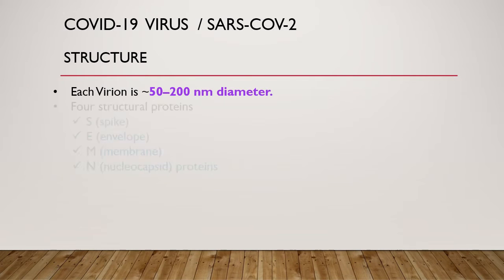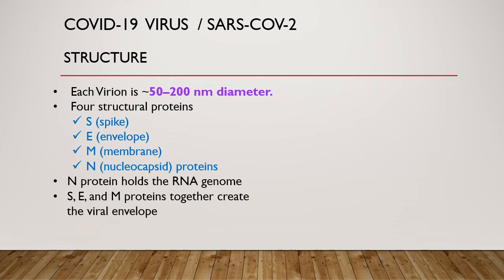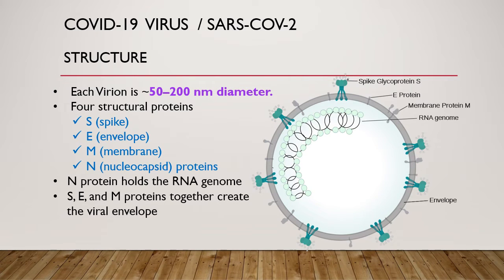Regarding the structure of the COVID-19 virus: each coronavirus is approximately 50 to 200 nanometers in diameter. Like other coronaviruses, it has four structural proteins — spike protein (S protein), envelope protein (E protein), membrane protein (M protein), and nucleocapsid protein (N protein). The spike protein is responsible for allowing the virus to attach and fuse with the membrane of the host cell. The N protein holds the RNA genome together, while E and M proteins together create the viral envelope.